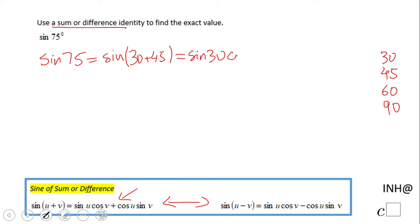cosine v, cosine 45, plus cosine u, cosine 30, sine v, sine of 45. Okay, so that is using the formula.